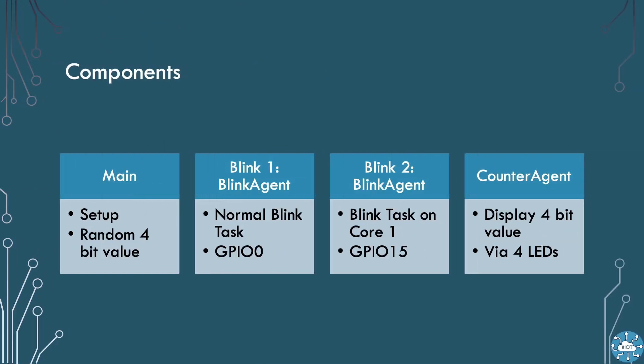The FreeRTOS configuration file for the project is in the port FreeRTOS kernel directory. This includes definitions needed for SMP, including the number of cores and whether we can associate a task with a specific core, called affinity. My example is going to use four components. Blink1 and Blink2 are both instances of the blink agent class. These will be the tasks that blink the green and blue LEDs. I build tasks by encapsulating them as a C++ object.